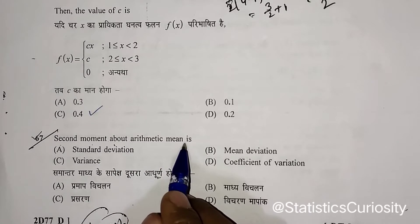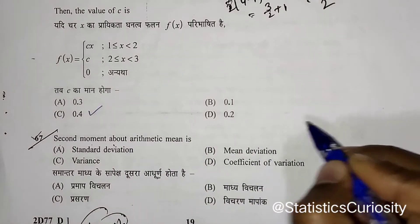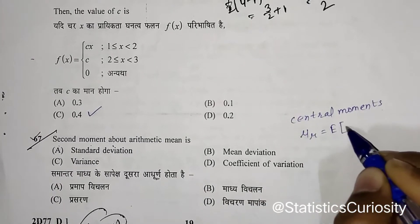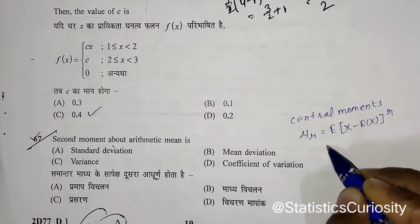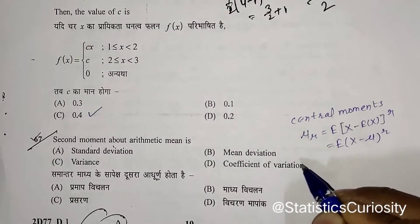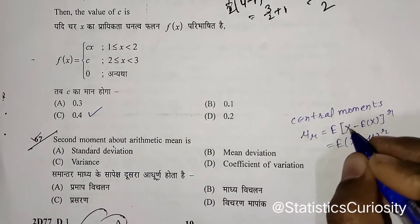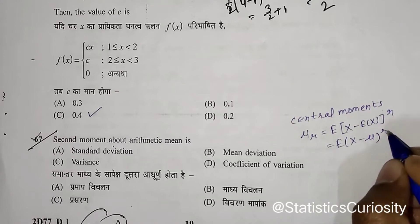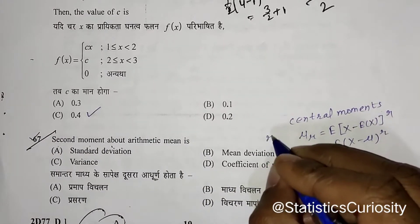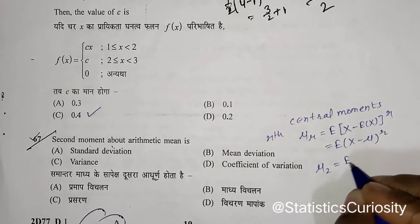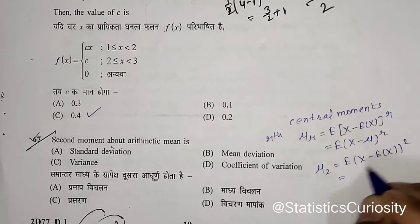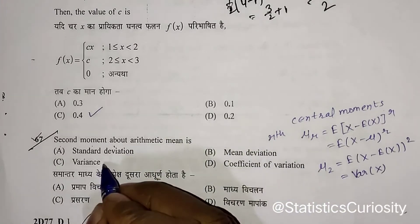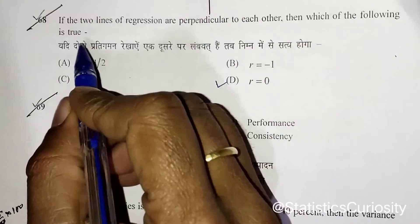Next question: the second moment about the arithmetic mean. Moments about the mean are also known as central moments. The formula is E[(X − E[X])^r], also written as E[(X − μ)^r]. For the second moment, we replace r with 2, giving μ₂ = E[(X − E[X])²]. This is the well-known formula for the variance of X. So the second moment about the arithmetic mean is nothing but the variance. Option C is the correct answer.